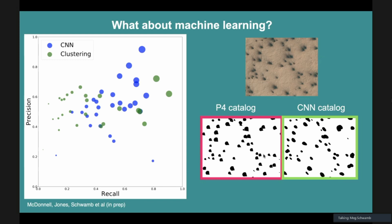Overall, when we look at these techniques, this is showing the left plot showing the difference between recall and precision for this clustering algorithm that was tried, this automated model, as well as the CNN.